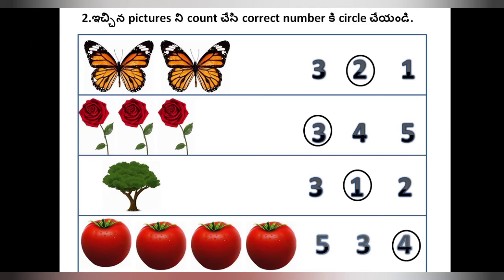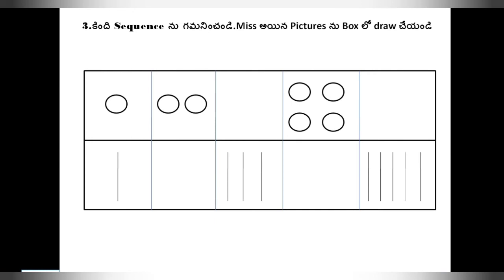Here the children will count every picture and they can develop their skills for the future. Next, Roman number 3.